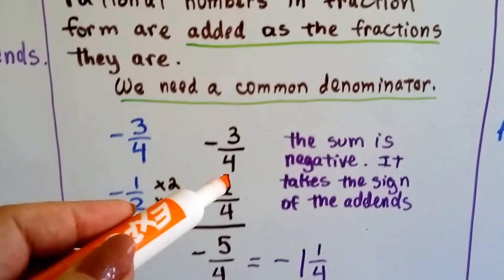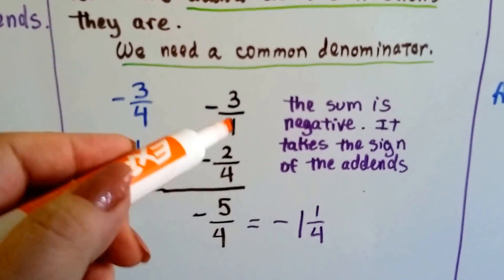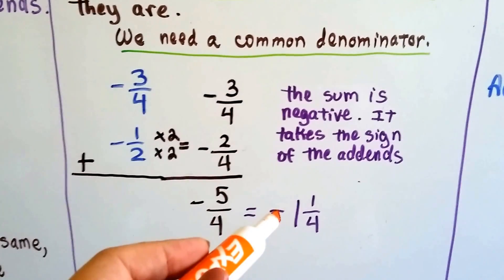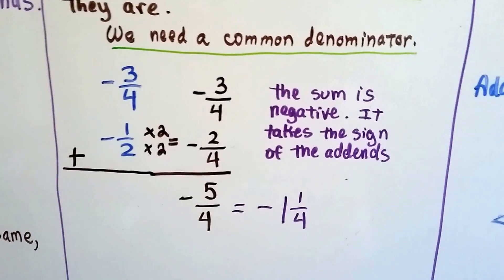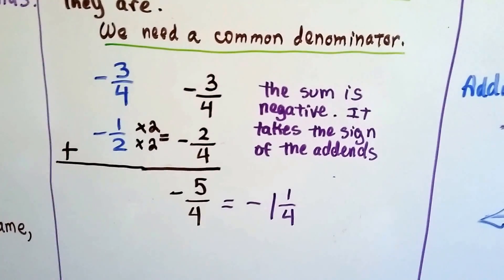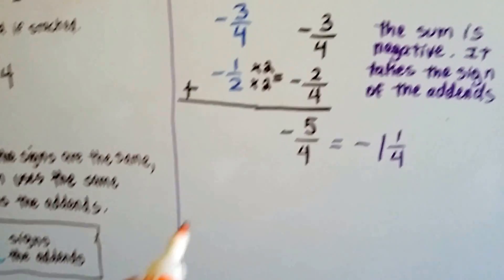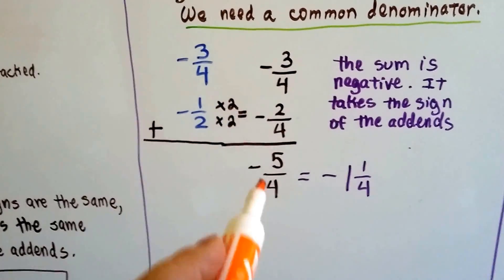Now we can add the numerators. 3 and 2 is 5. We drop the 4 denominator down, we have negative 5 fourths. When we simplify it, it becomes negative 1 and 1 fourth. See? The sum is negative, and it takes the sign of the addends. Like signs, like the addends. And they're both negative, so it became a negative.